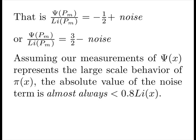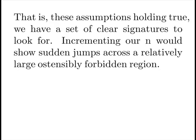That is, at large scales, we expect our scaled psi of pm to be minus a half plus a noise or plus three halves minus noise. Assuming our measurements of this error function represent large-scale behavior of pi of x, the absolute value of a noise term is almost always less than 0.8 log integral of x. That is, these assumptions holding true, we have a clear set of signatures to look for, incrementing our n, which will show sudden jumps across a relatively large, ostensibly forbidden region.